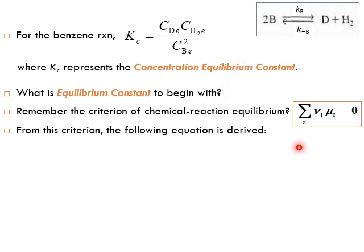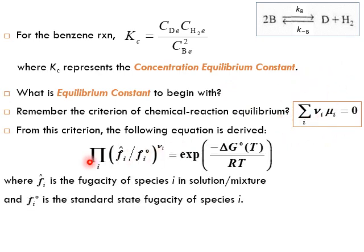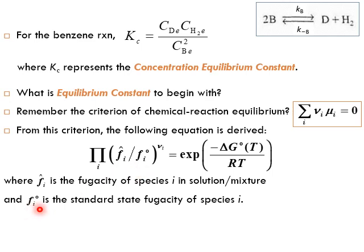At equilibrium, the chemical potential pushing species from one side equals the chemical potential pushing from the other side, so no one wins and equilibrium is reached. From this criterion, the following equation is derived: the product of terms (f_i_hat / f_i_naught) for species i raised to the power nu_i equals the exponent of minus standard delta G reaction at temperature T divided by RT.